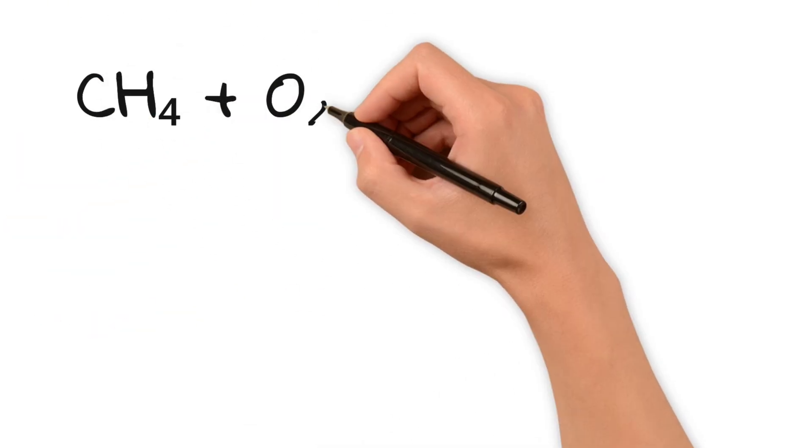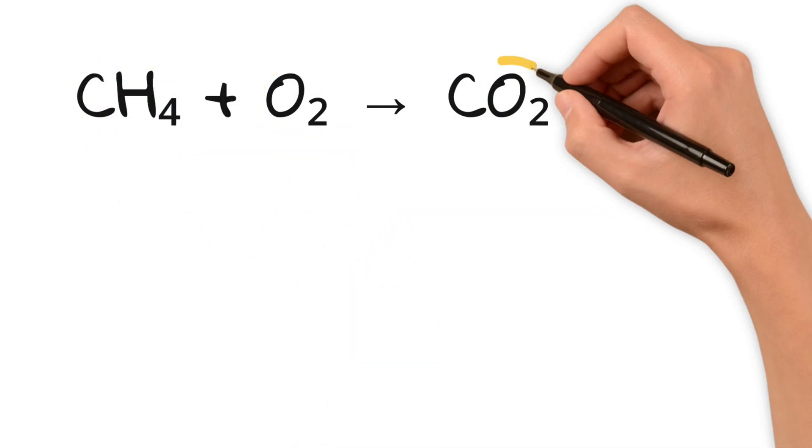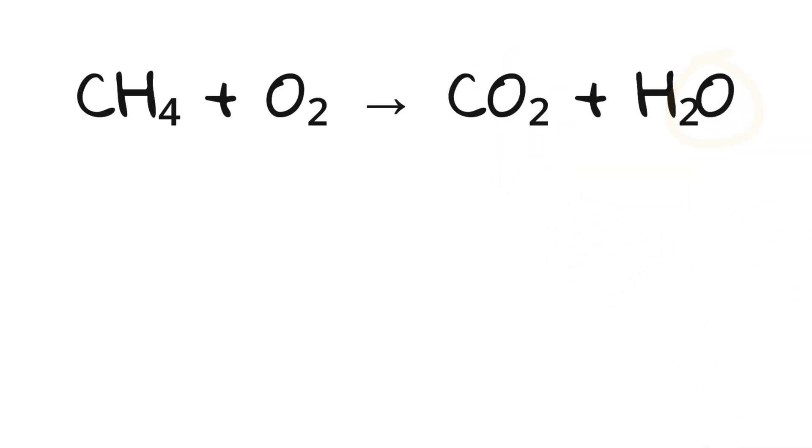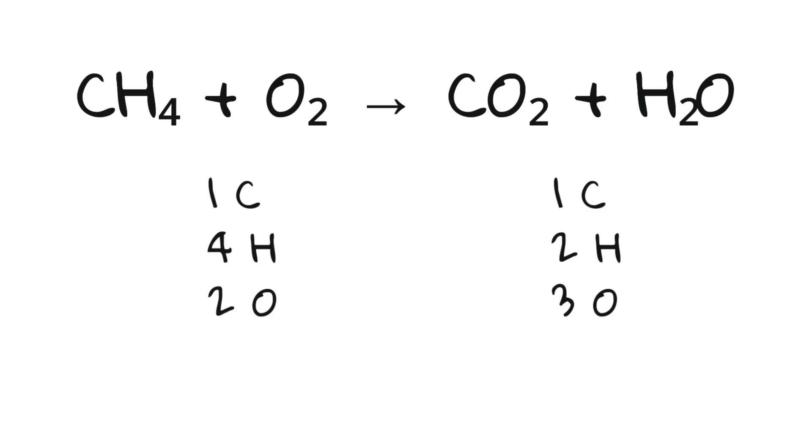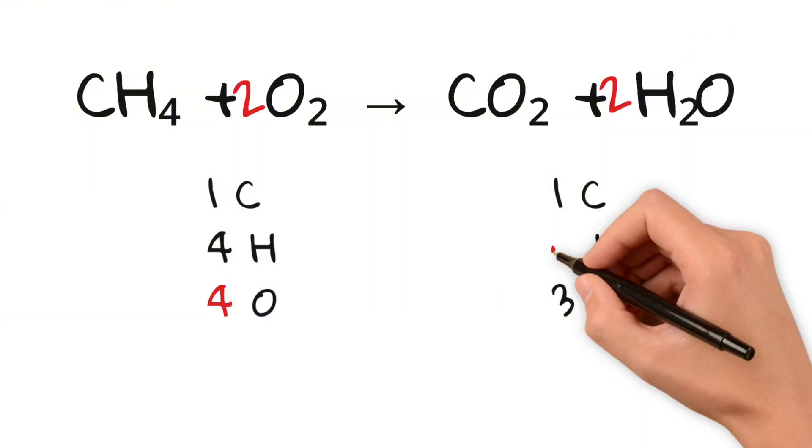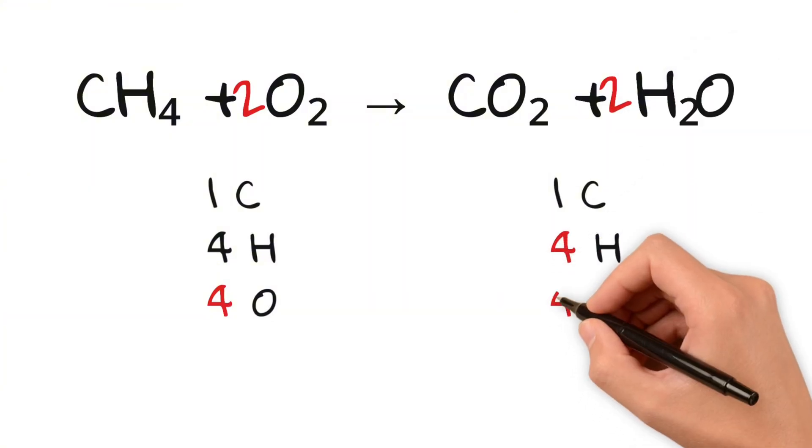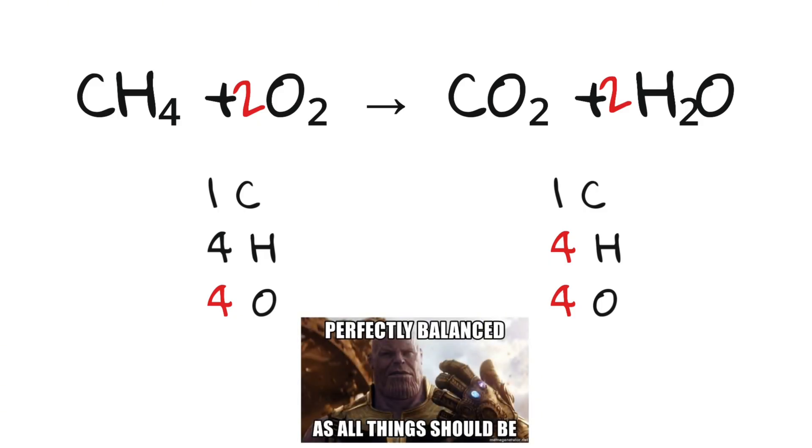Take this reaction. Right now the atoms don't match. There's one carbon, four hydrogens and only two oxygens on the left but three oxygens and two hydrogens on the right. That's not allowed. We fix this by balancing. By increasing the number of oxygens on the left and the number of water on the right, now both sides have one carbon, four hydrogen and four oxygen. The chemical equation is now balanced.